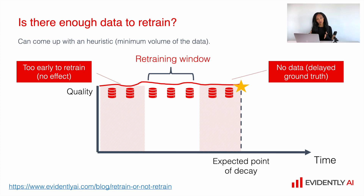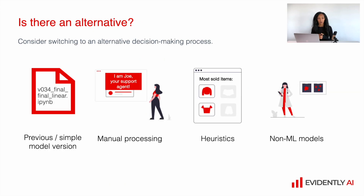We have a nice blog related to this topic, so if it is relevant, I suggest you take a look. It is always important to check what your alternatives are. Can you switch to the previous model, or a less precise but more stable model? Maybe you can switch to a manual process if you have a large support team. Maybe you can use some heuristics — like instead of personal recommendations, create standard recommendations based on product popularity. Or just use non-machine-learning-based models, for example first-principle models that take into account physics, medicine, or chemistry, whatever makes sense for your product.